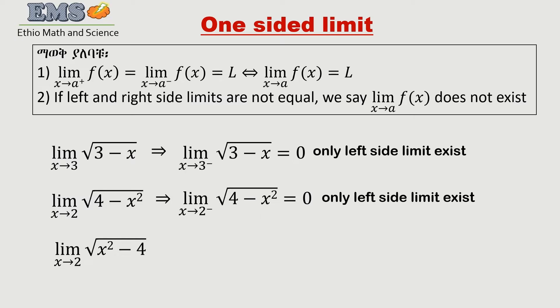The limit of x² − 6x as x goes to 2. For this example, both the right-side limit and the left-side limit exist. From the right side, approaching values give us a number. The left-side limit is calculated, and both the left and right side limits are equal.